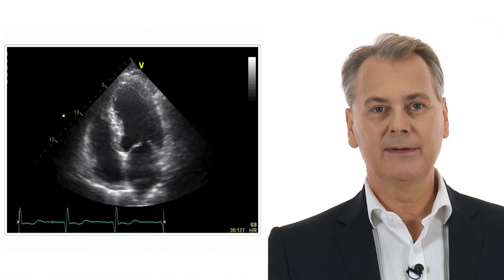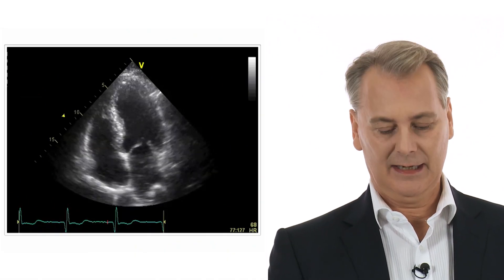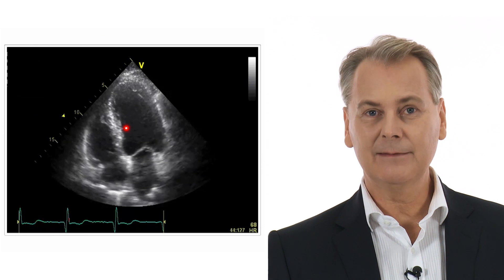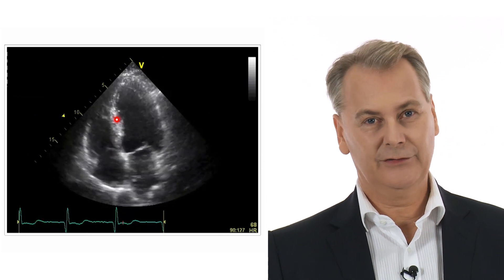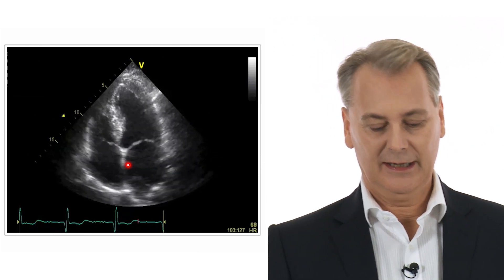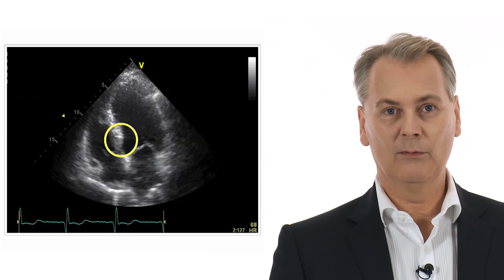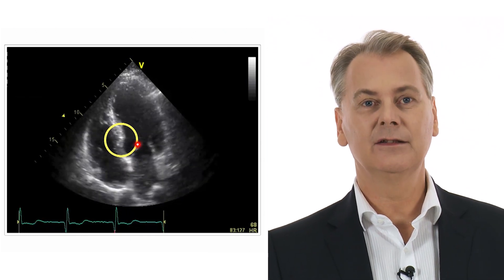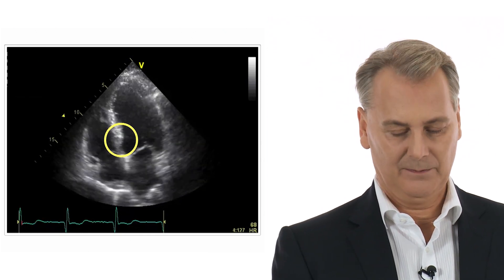The same can be seen here in the four-chamber view. Remember, the basal part of the inferior septum belongs to the right coronary artery, so we expect to see wall-motion abnormalities here, and indeed we do.